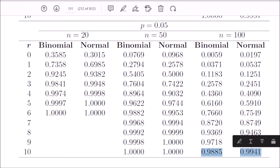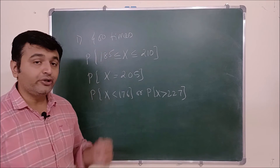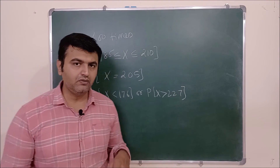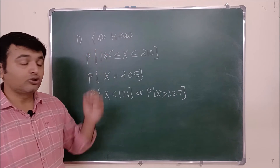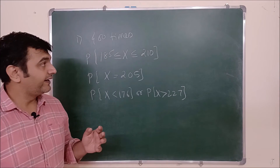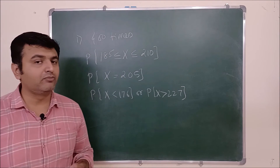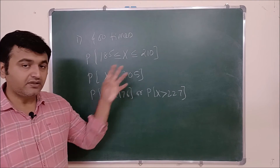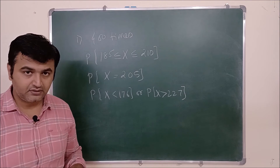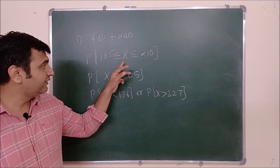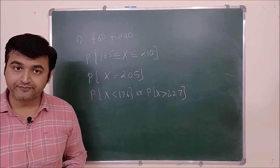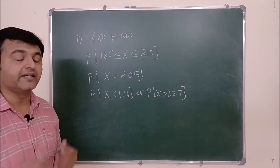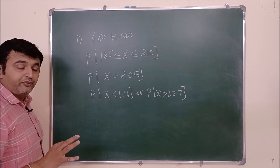Now let's go for the example. Here is the first question: a coin is tossed 400 times — you can see the number is very big, so you can't use the binomial distribution table. These are problems from the Walpole book. Let X be the random variable counting the number of heads. What is the probability that X will take a value from 185 to 210?